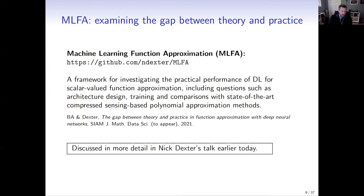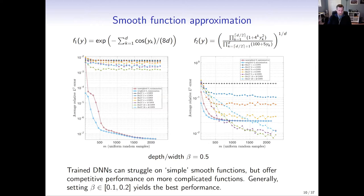A couple of years ago when Nick joined my group, we set to work trying to understand how well deep neural networks perform as function approximators for the types of problems we have in scientific computing. We have a framework called MLFA — here's the GitHub link — for investigating the practical performance of deep learning on scalar-valued function approximation. It allows us to dig into questions such as architecture design, how to train, how to optimize, and allows comparisons with state-of-the-art polynomial approximation methods based on compressed sensing, at least for smooth function approximation.